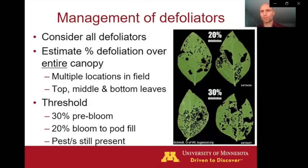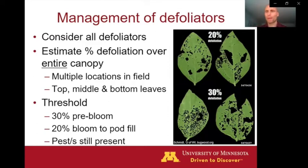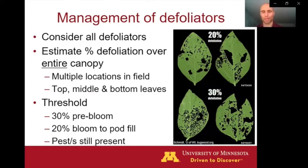So these caterpillars have chewing mouth parts — they bite holes in the leaves, so they're considered defoliators. In Minnesota, typically any one given defoliator species isn't so abundant that we're thinking about managing that particular species. But sometimes we get multiple defoliating species showing up at the same time, and with their combined effects, we can get up to treatable levels. So our recommendations are to consider defoliation from all the defoliators that might be out in your field — caterpillars, beetles, grasshoppers. We want to estimate defoliation across the entire field, so that requires looking at plants from multiple locations spread throughout the field.